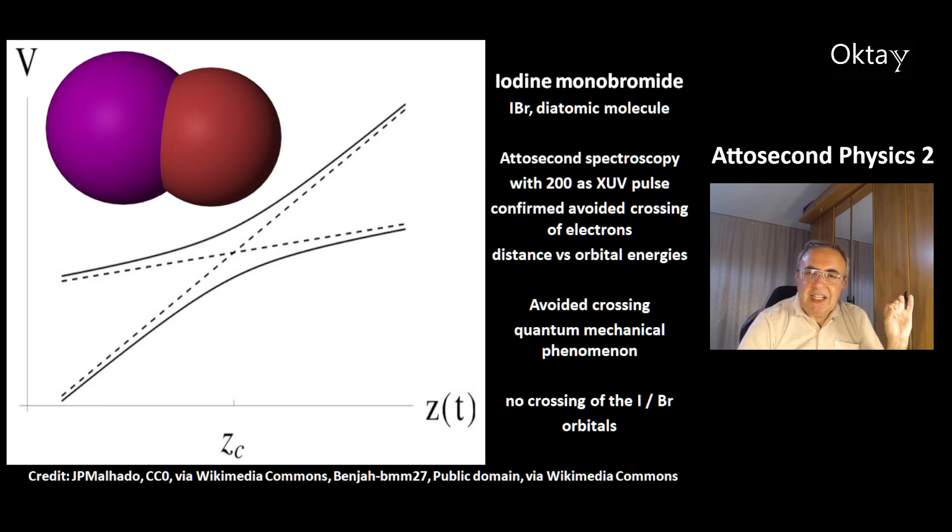This is an example of the molecule iodine monobromide, IBr. It's a model for a diatomic molecule. Attosecond spectroscopy with a 200-attosecond extreme UV pulse showed that there is an avoided crossing of electrons. This was confirmed.